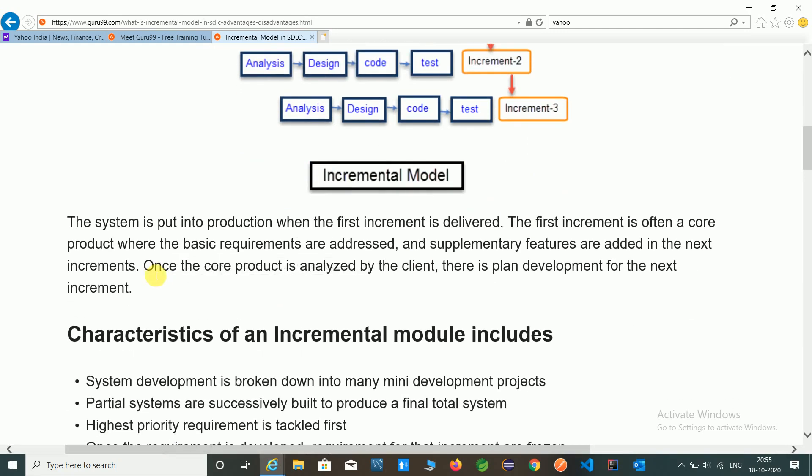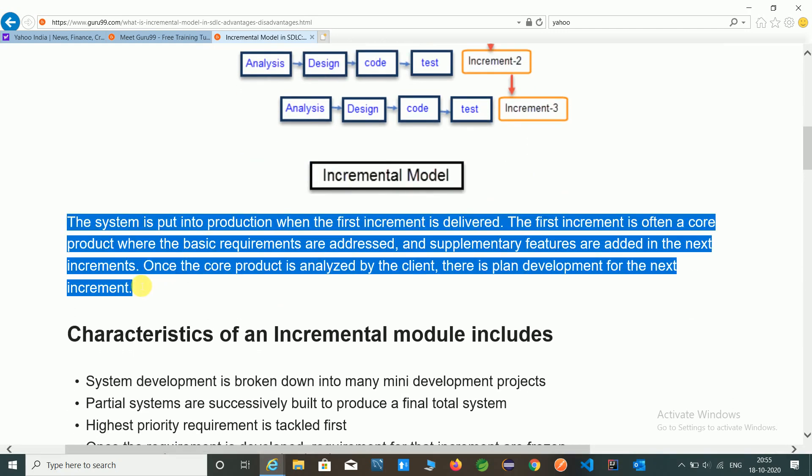So here you can see the theory of incremental model. The system is put into production when the first increment is delivered. When first model is completed, then this model is delivered to the deployment process and production phases.